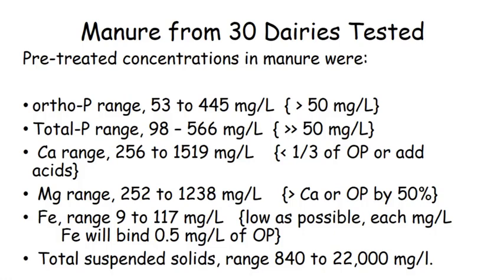We did have a few farms with high-phosphorus water for various reasons. Total suspended solids ranged from about 840 to 22,000 milligrams per liter. The lower the total suspended solids, the better the performance we get — we think it affects carryover of very fine struvite over the top of the cone.